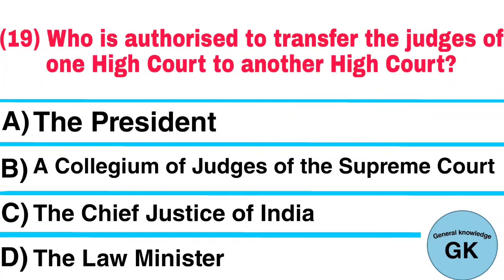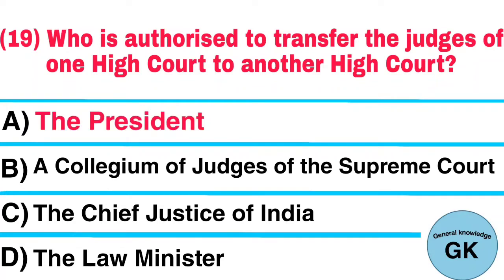Question number 19. Who is authorized to transfer the judges of one high court to another high court? A. The President, B. A Collegium of Judges of the Supreme Court, C. The Chief Justice of India, D. The Law Minister. Answer: The President.